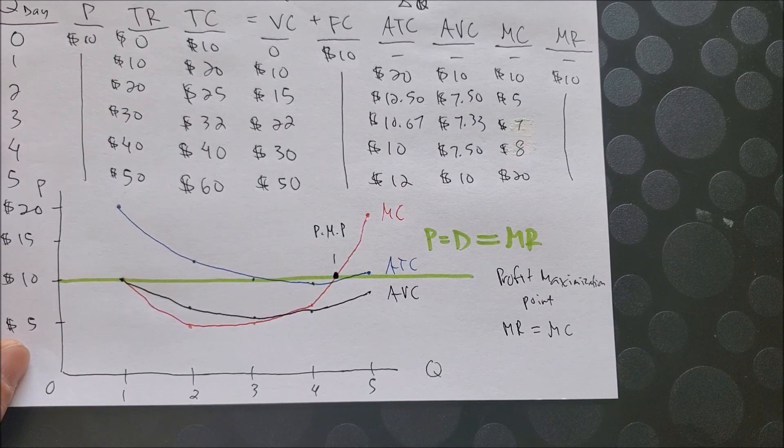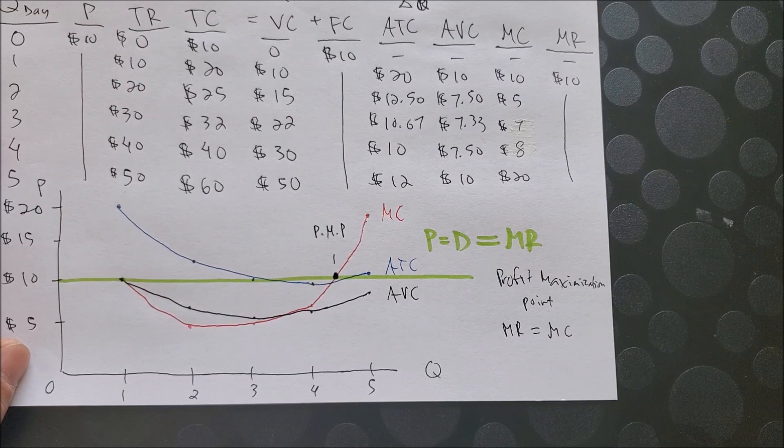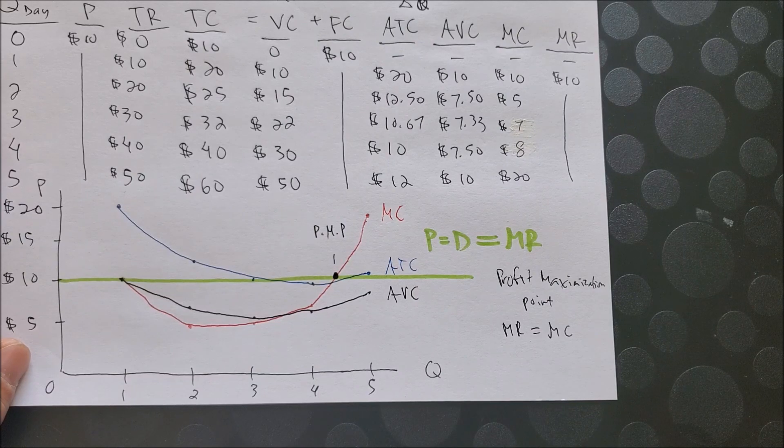Now, we can also say that at this point, you are not supposed to wash one more vehicle. Because if you do wash one more vehicle, that can show you that the cost in red is greater than the revenue in green.